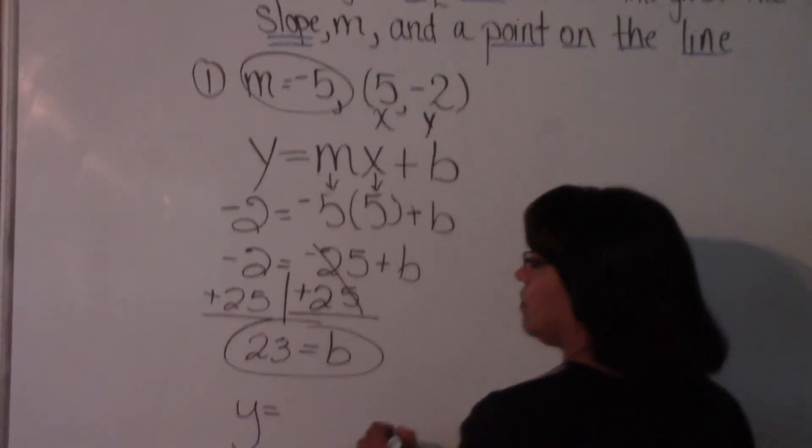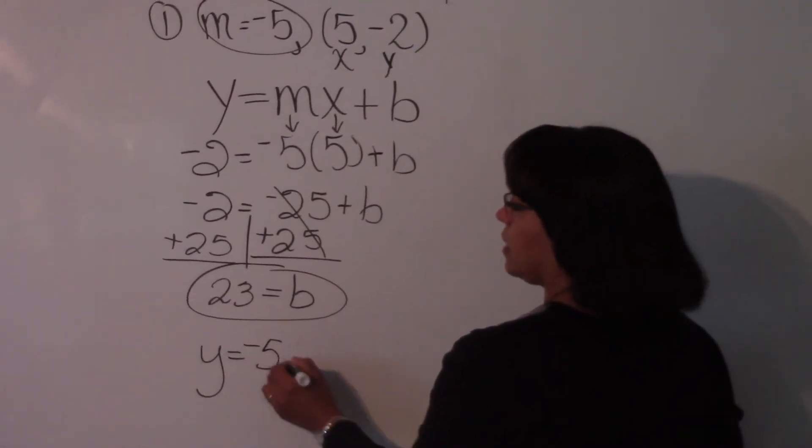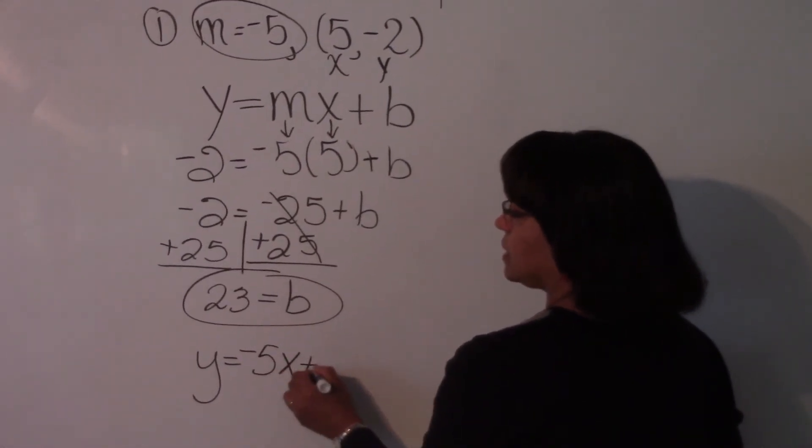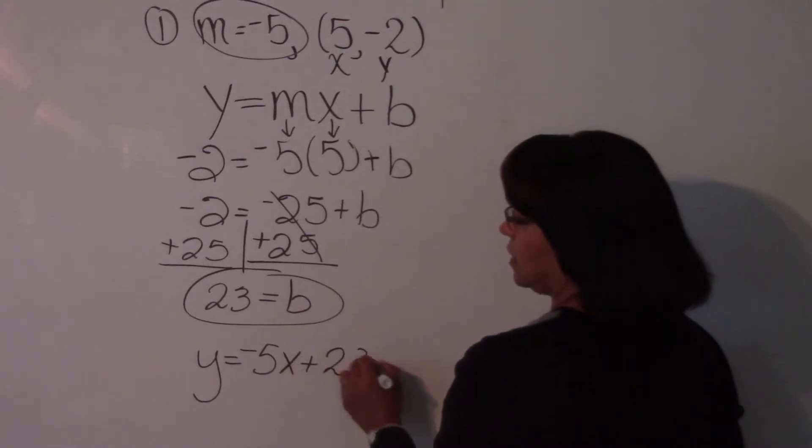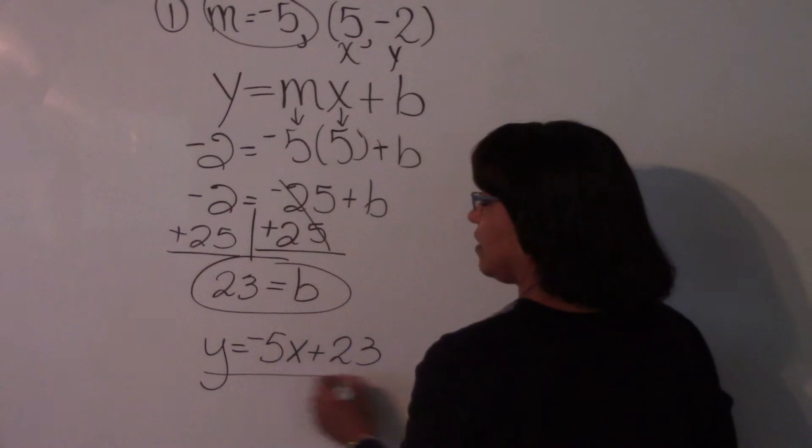Now you have what you need to write the equation of your line. You have b is equal to 23, and we have m is equal to negative 5. So now we plug in for m and b. y is equal to negative 5x plus 23. This is your answer.